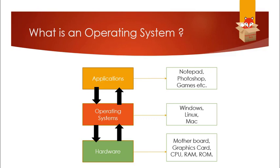So that's why an operating system is used. An operating system acts as an interface between the application and the hardware. So whenever Photoshop needs to communicate with the CPU or RAM, it needs to contact the operating system. The operating system will give support for Photoshop to communicate with the hardware.